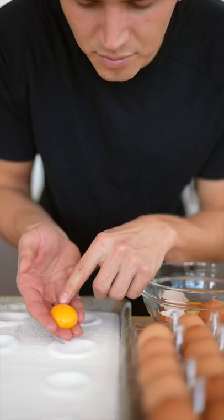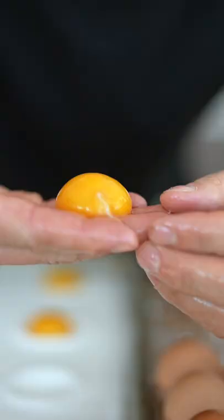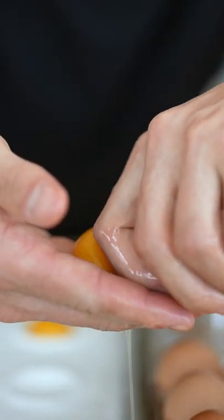Separate out your egg yolks, then place them gently into the indentation. Do your best to remove those little white bits that hang off the edge.